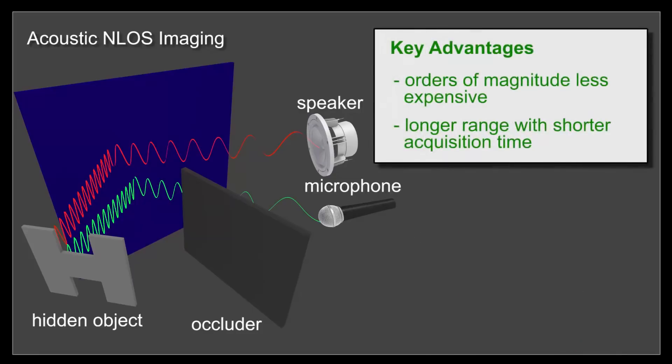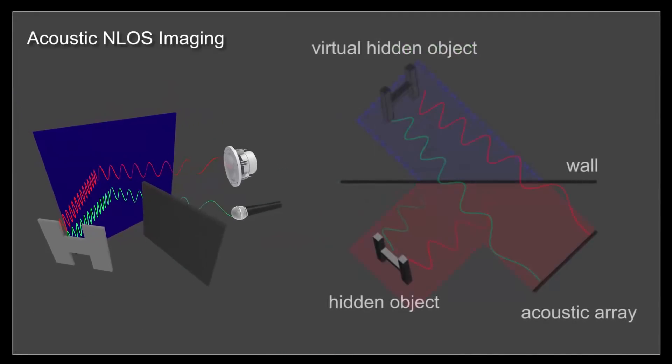Acoustic non-line-of-sight imaging is orders of magnitude less expensive than most optical systems and captures hidden 3D geometry at longer ranges with shorter acquisition times compared to optical methods.